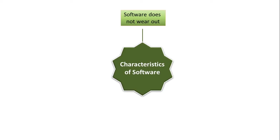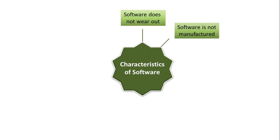The next characteristic is software is not manufactured, although some similarities exist between software development and hardware manufacture. Software is not manufactured but is developed, so it does not require any raw material for its development.